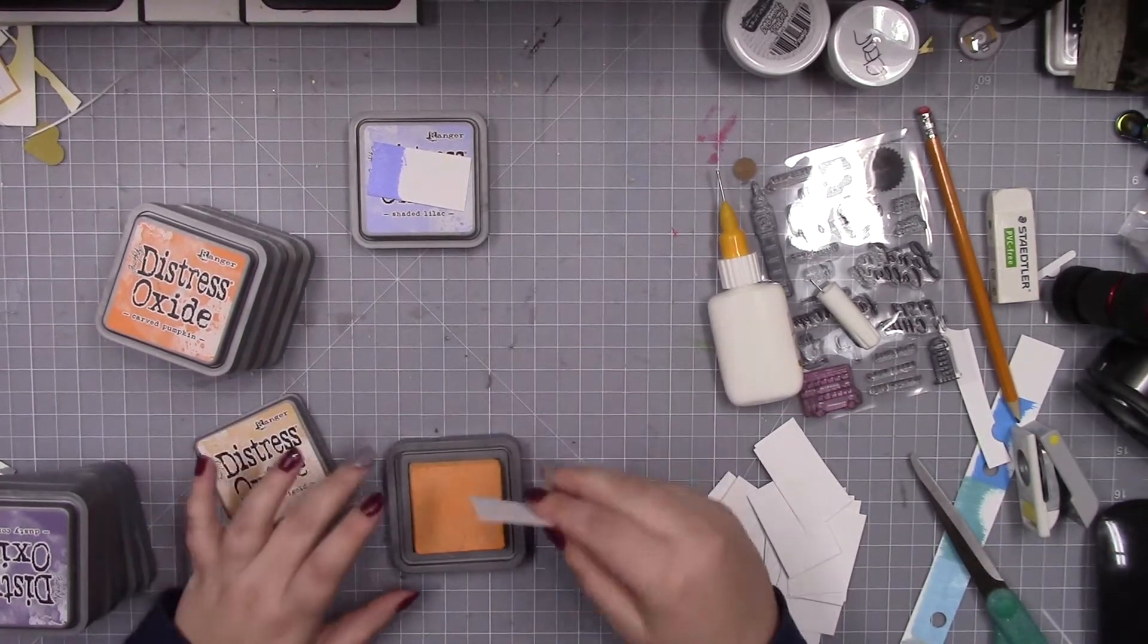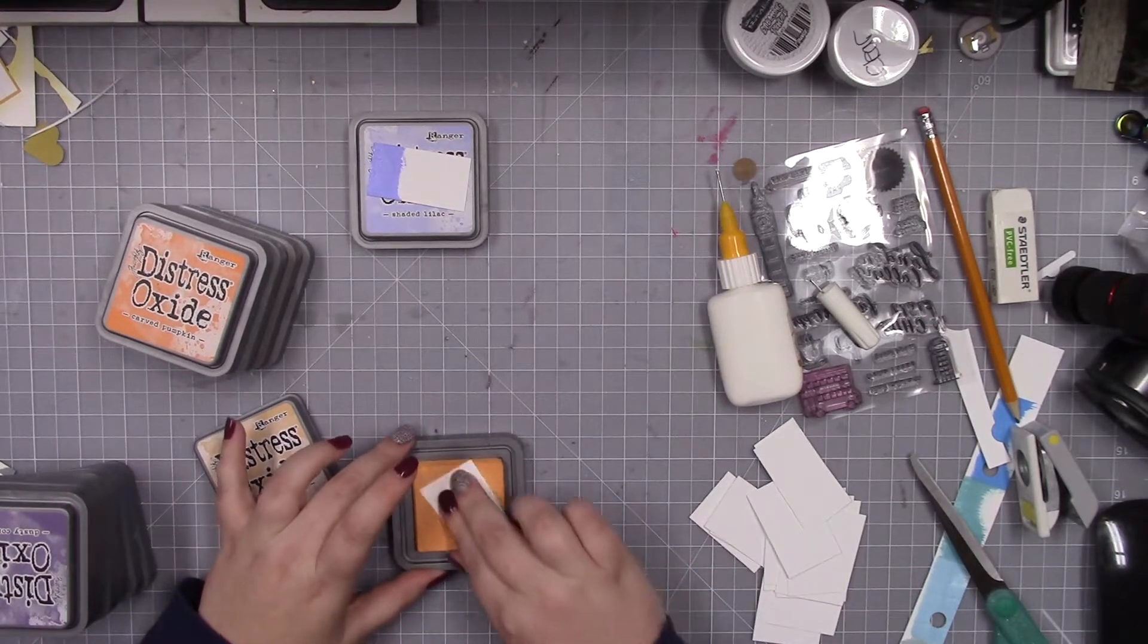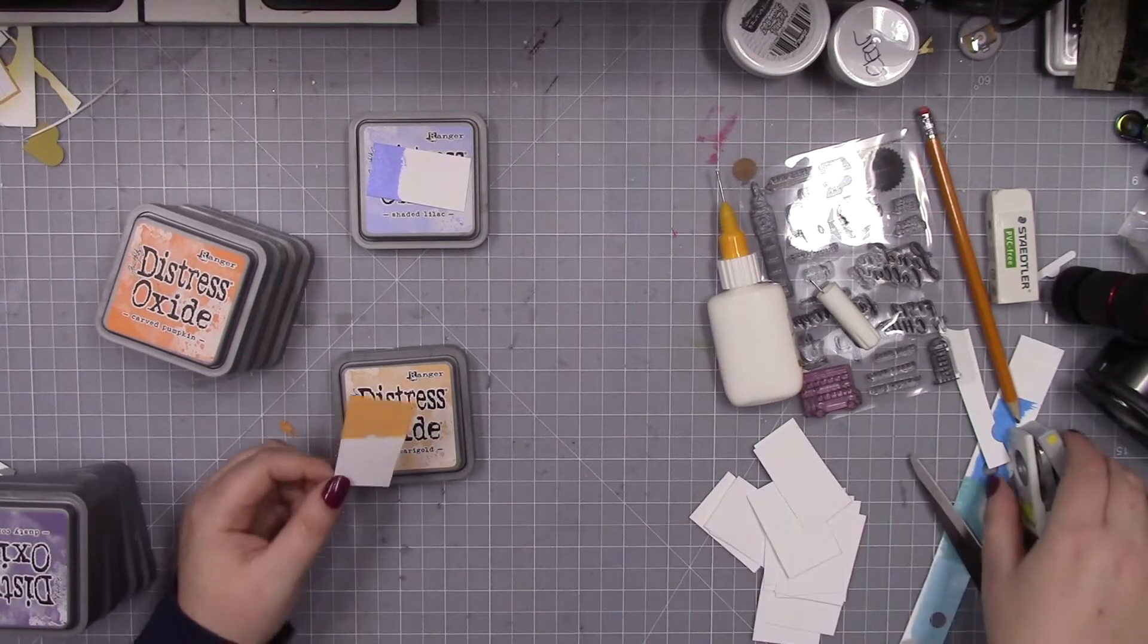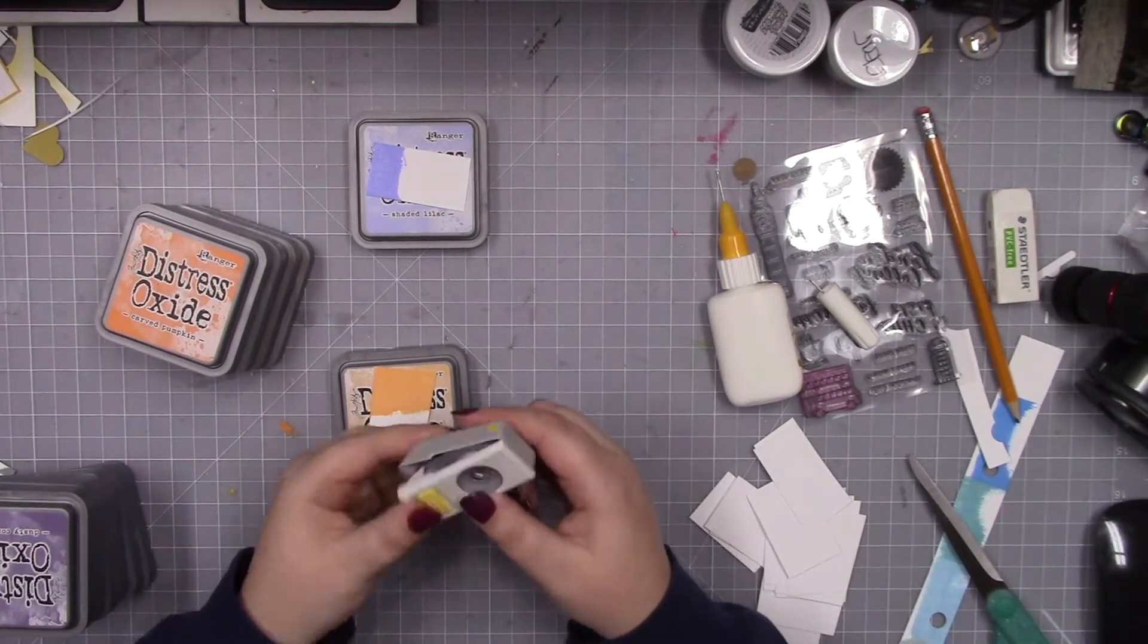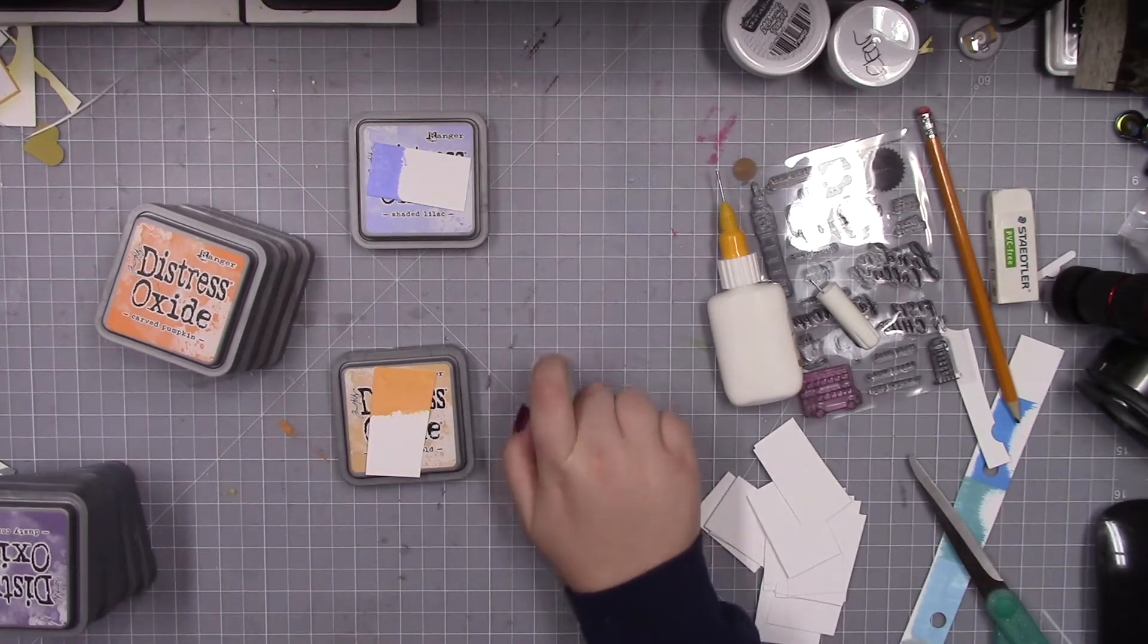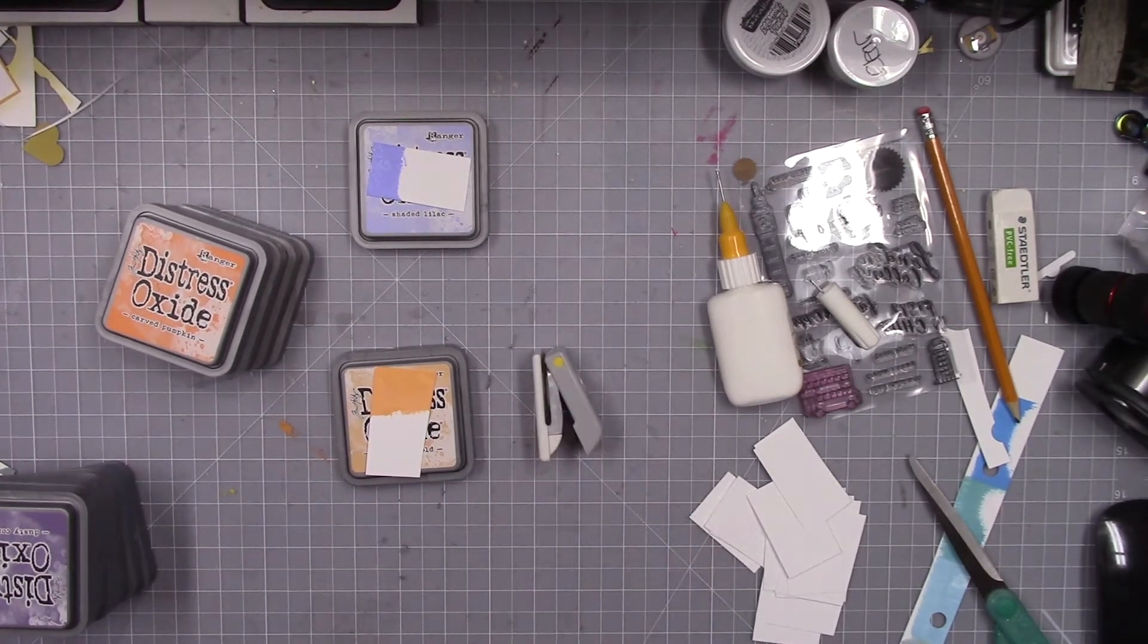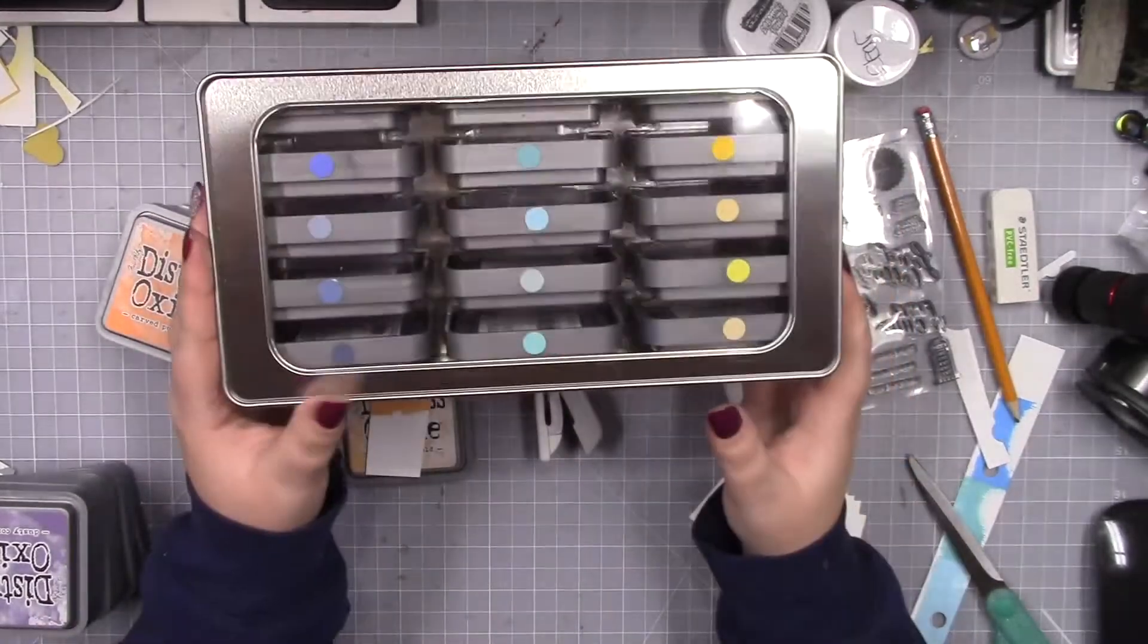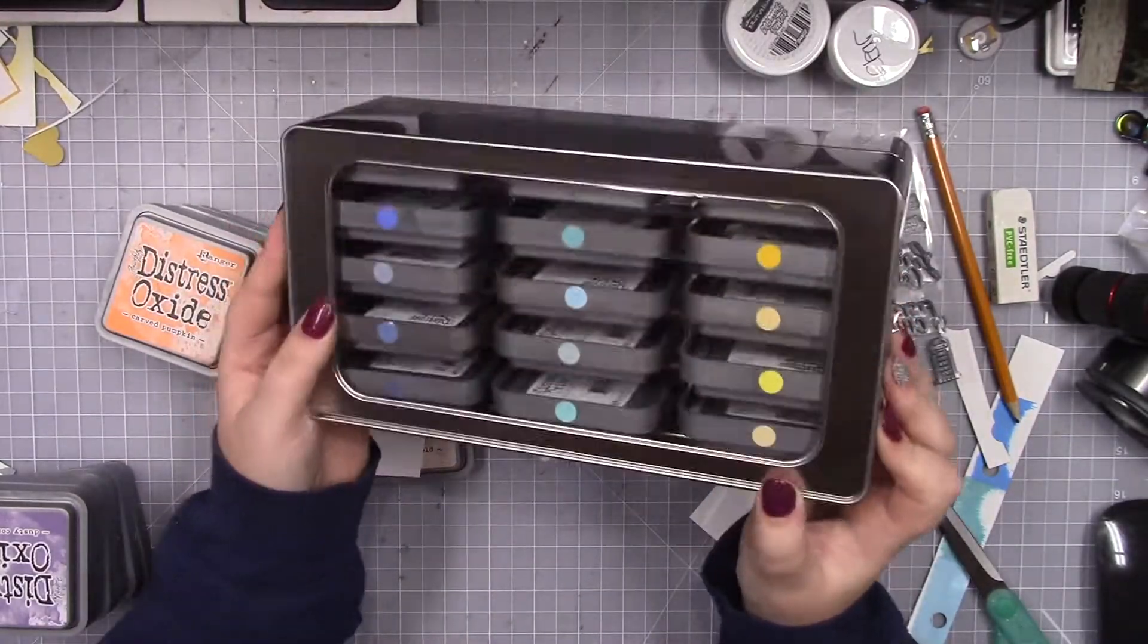and I rub them on the ink pad. Then I have this 3/8 inch punch, and I punch out circles and put them on top of my inks.